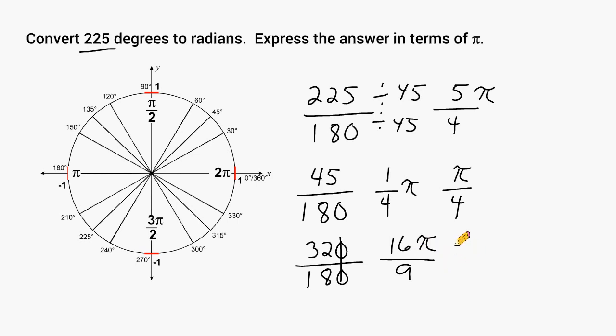In review: when converting degrees into radians, you can set up a proportion and solve by cross multiplication. However, the easier shortcut is to write the number of degrees as your numerator over 180 as the denominator, simplify that fraction, then write pi with your numerator. And that's all there is to it.